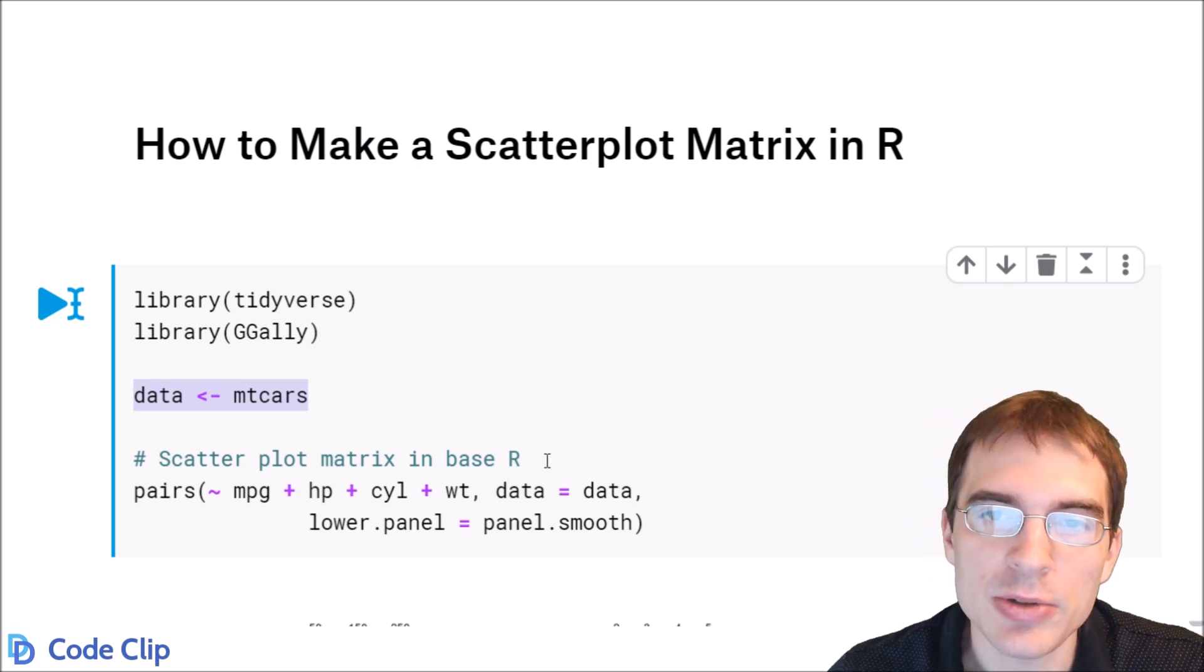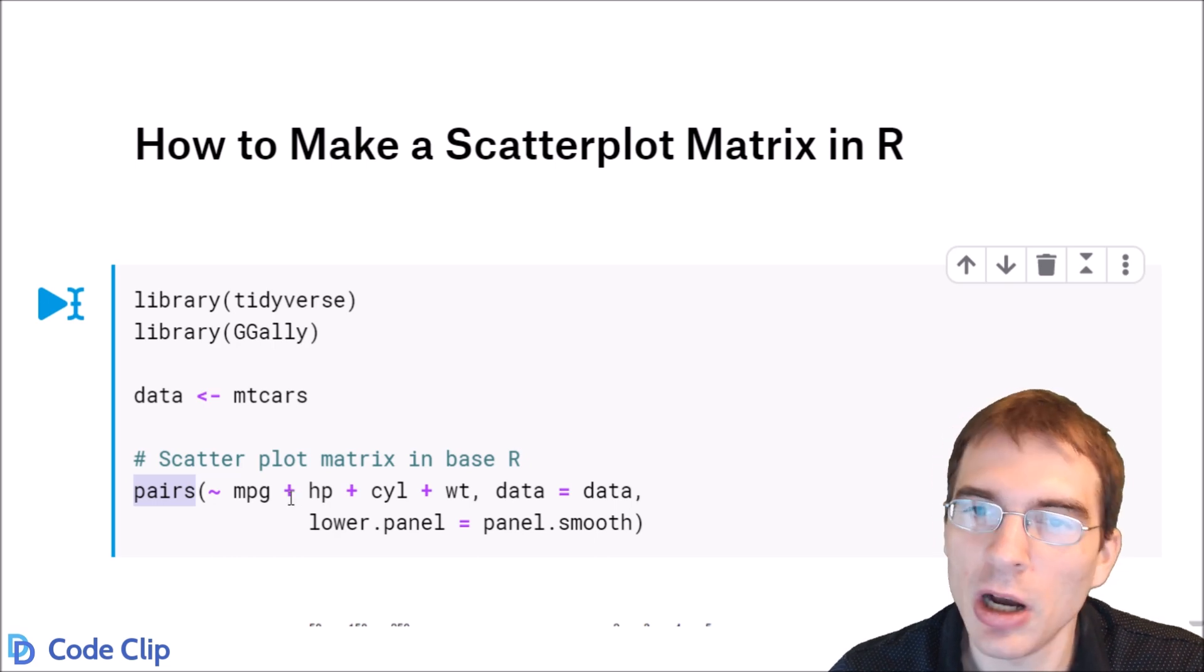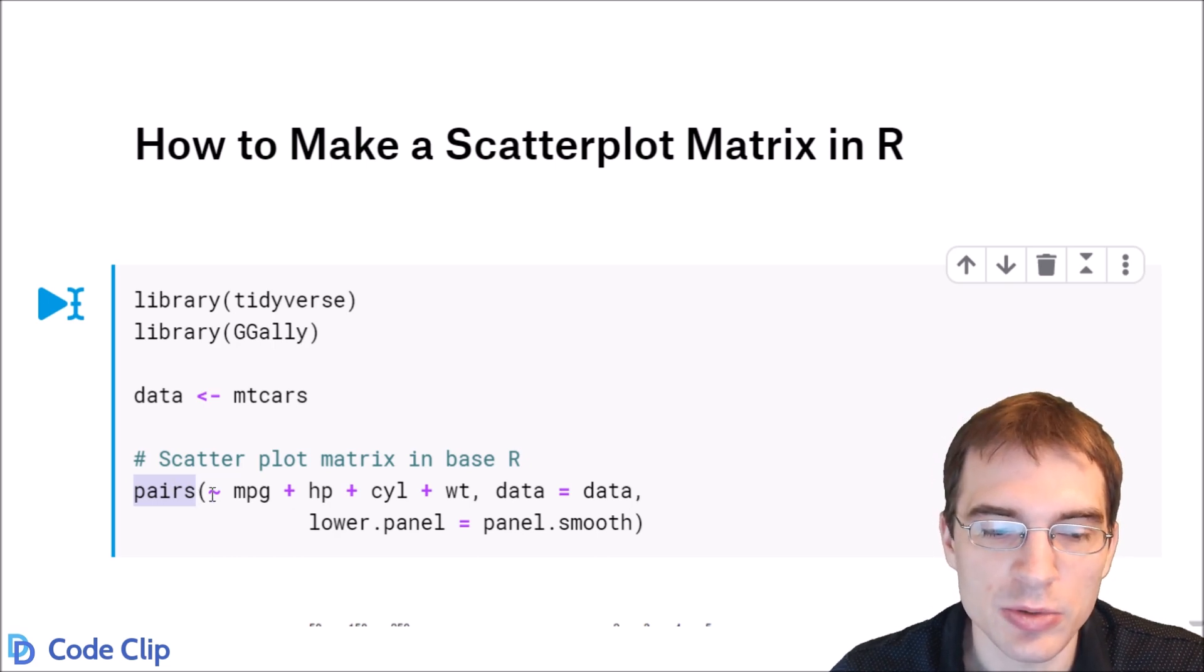To do a scatterplot matrix in base R, you use the pairs function, and the first thing you're passing in is a formula that's essentially a list of all the different columns you want to include. So you use this tilde, and then all the columns you want to include separated by pluses, then you pass in the dataset.